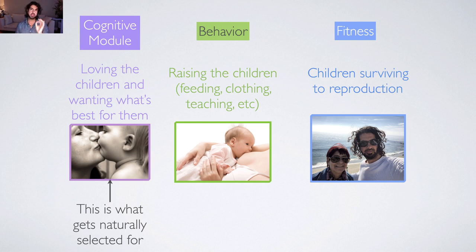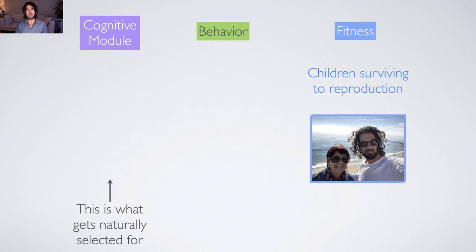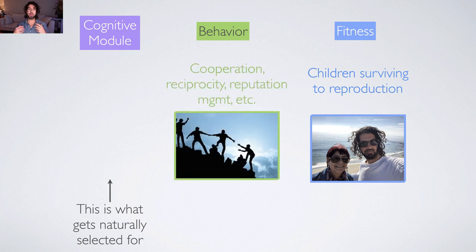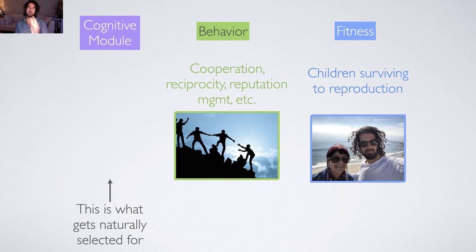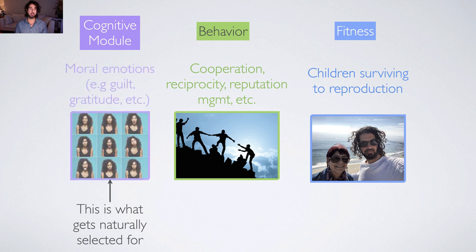In the context of morality — and this was what Haidt was arguing — the behaviors which actually lead you to be a reproductively successful member of the human species are things like cooperation, engaging in reciprocity (which Christakis also talked about), reputation management, and making sure you're doing the right thing. If those are the behaviors leading to fitness, what are the cognitive modules that motivate that behavior? In Haidt's case, he was talking predominantly about the moral emotions.